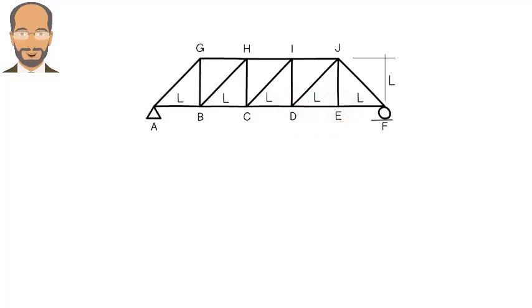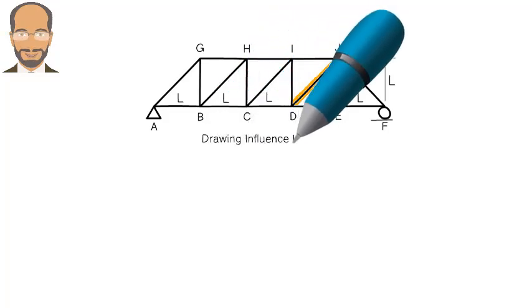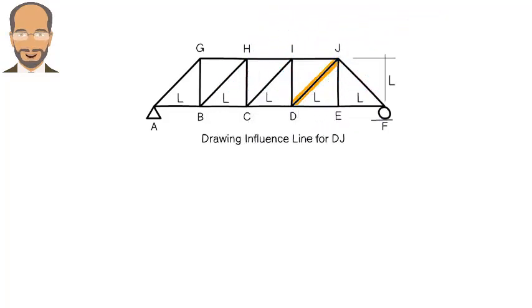Let's draw the influence line for member DJ. We know that when the load is at A or F, all member forces are zero. So, our line graph starts at zero and ends at zero.